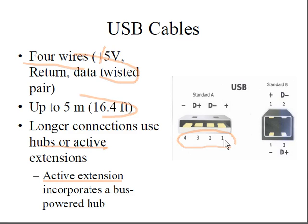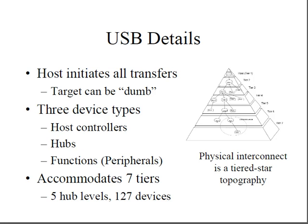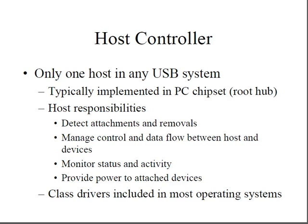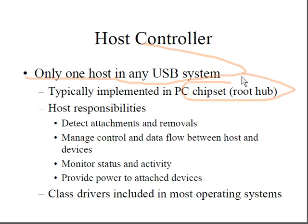In USB detailing, the host initiates all transfers, meaning the target device can be passive. There are three device types: host controllers, hubs, and functions (peripherals). The architecture accommodates seven tiers, five hub levels, and up to 127 devices. The physical interconnect uses a tiered star topology. There is only one host controller in any USB system, typically implemented in a PC chipset.